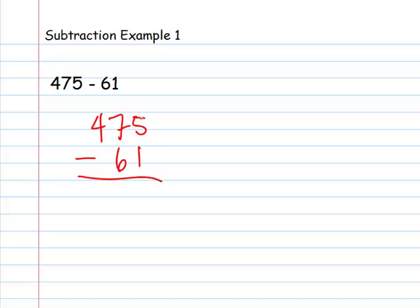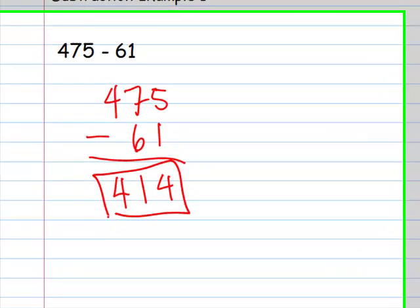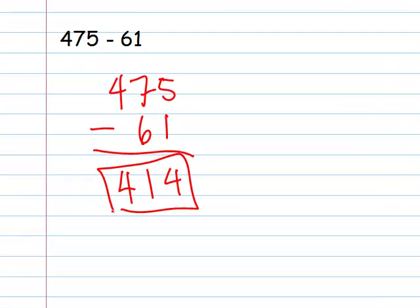Going from right to left: 5 minus 1 is 4, 7 minus 6 is 1, and 4 — there's nothing here so we assume it's 0 — 4 minus 0 is going to be 4. So our answer here is 414.